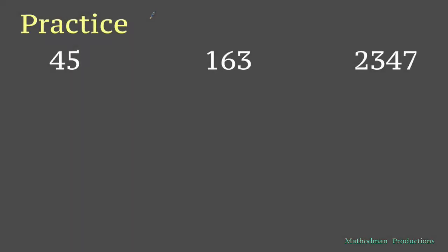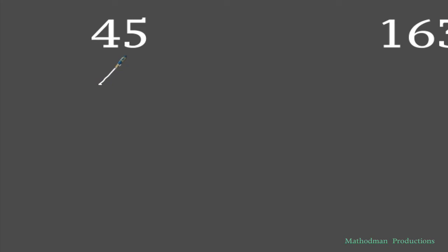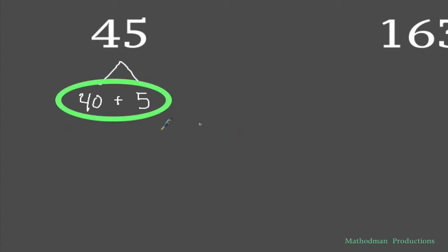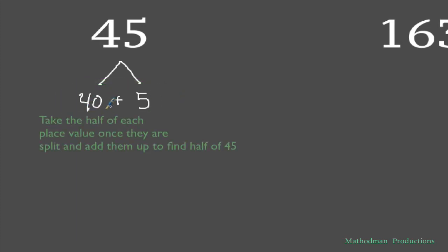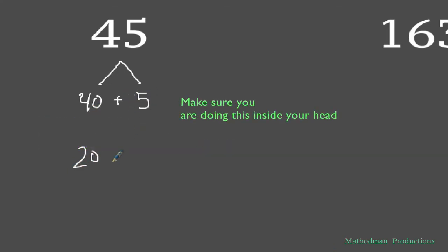To divide by two in your head, all you have to do is break down a number by its place value. For instance, 45 is really just 40 plus 5. So if I want to take half of that, all I have to do is take half of each place value. Half of 40 from the table we went over earlier is 20, and half of 5 is just 2.5.